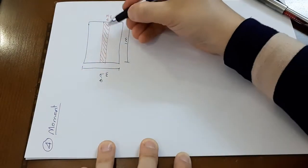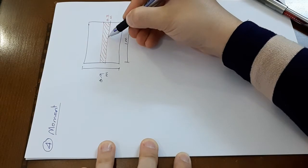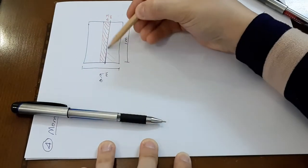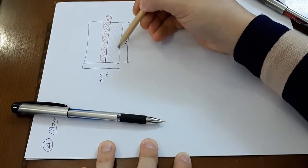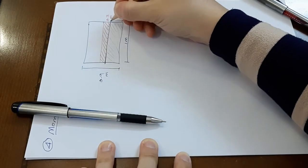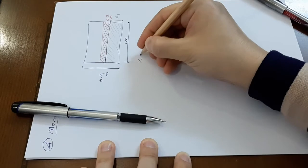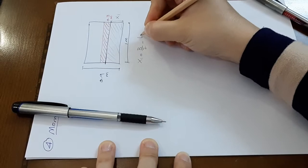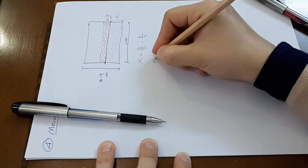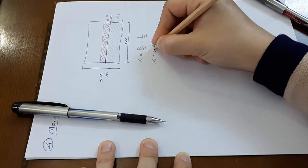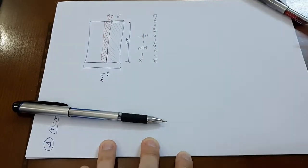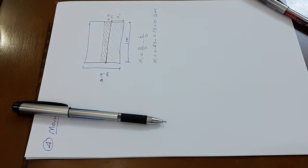The moment is calculated about an axis at the face of the wall. The shaded area causes the force. x1 equals b over 2 minus t over 2, so x1 equals 0.45 minus 0.15, which equals 0.3 meter.